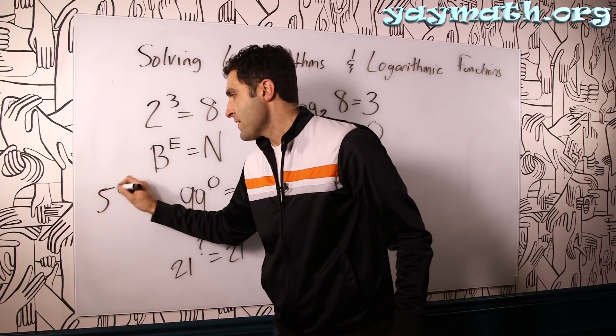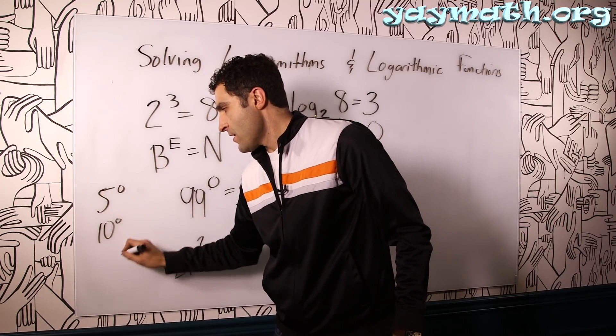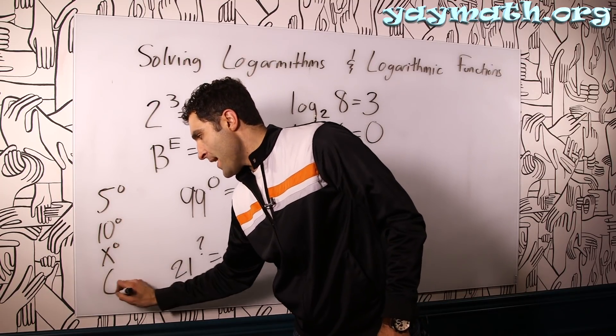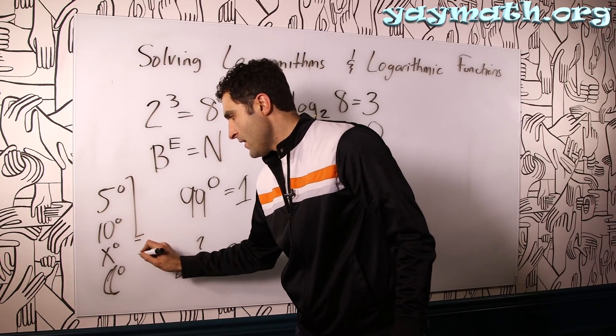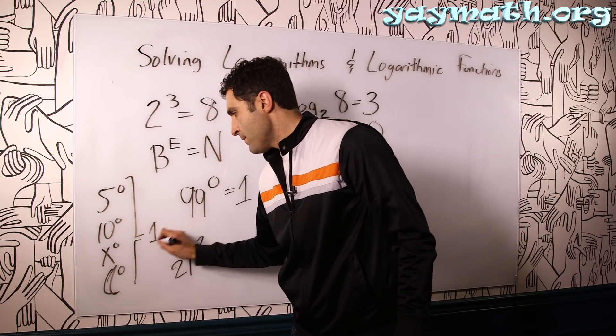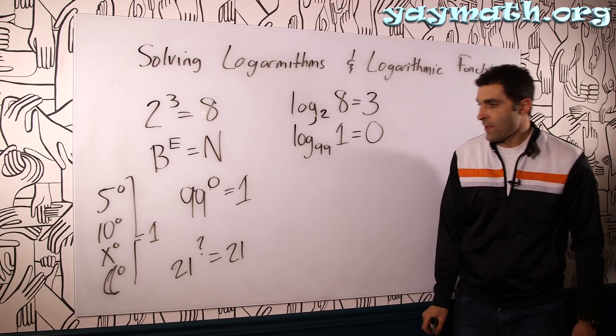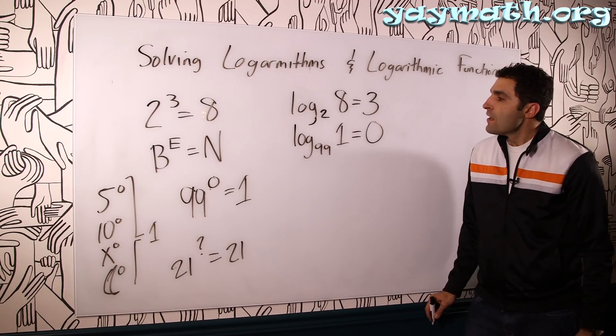Anything to the 0th power is always the number 1. Let's put that down. 5 to the 0, 10 to the 0, x to the 0, banana to the 0. This all equals 1. Anything to the 0 is 1, including banana.